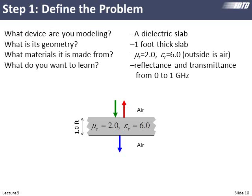Now last lecture, we did this walkthrough. We wanted to model transmission and reflection from a slab of dielectric. It was in air and that dielectric had a permeability of two and a permittivity of six and it was a foot thick. And we wanted to calculate reflectance and transmittance from zero up to one gigahertz.